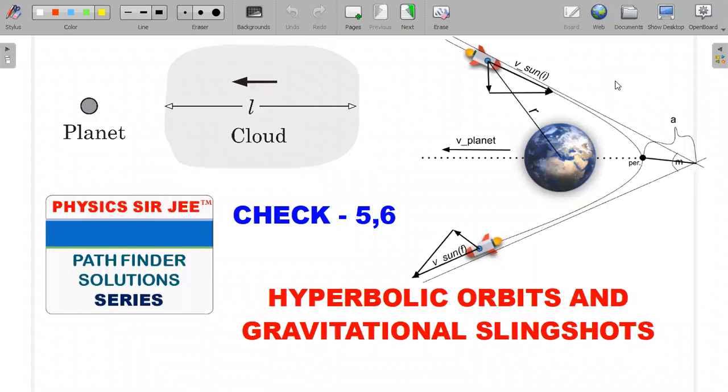Hey, you guys welcome back to the channel Physics Sir JEE and here we are in Pathfinder solution series and the topic of gravitation. This is the section check your understanding problem number five and six, both are similar actually. We can have more than one type of a solution. So what I would like to do in this particular video is to give one type of solution for problem number five and one type of solution for problem number six. Actually you can exchange the way you solve the two problems.